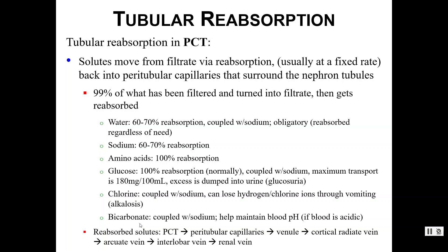If you are a solute that gets reabsorbed at the proximal tubule, here's the pathway you would take: from the proximal tubule you'd be reabsorbed back into the peritubular capillaries, then move through the venules, the cortical radiate vein, the arcuate vein, the interlobar vein, and eventually end up in the renal vein, which sends blood to the inferior vena cava.